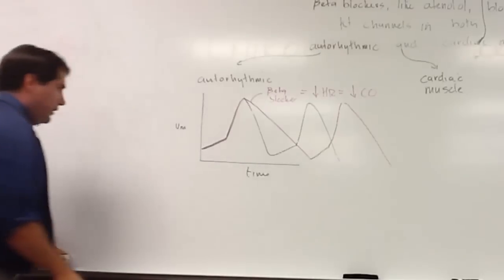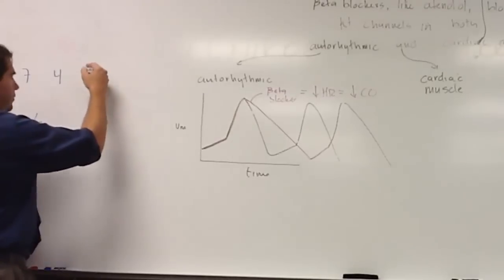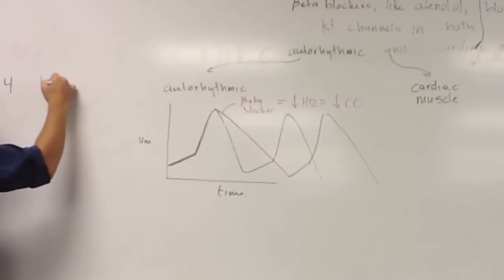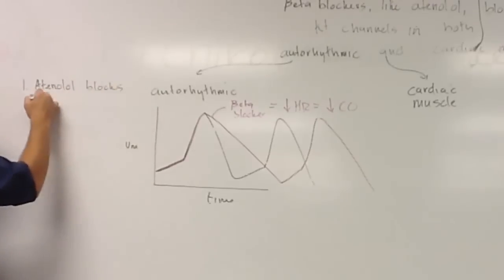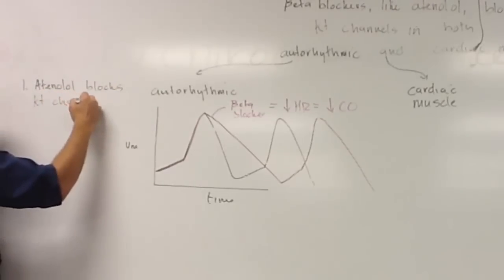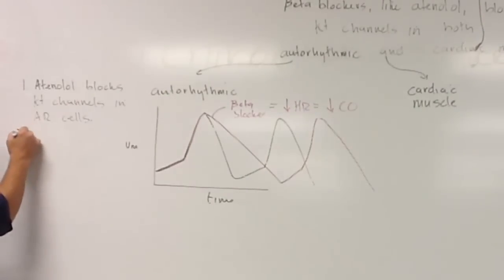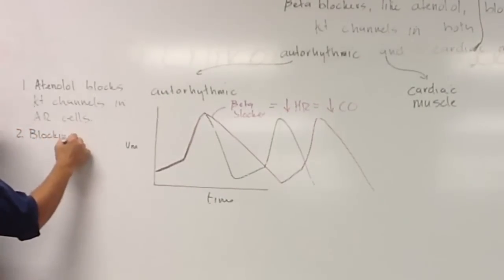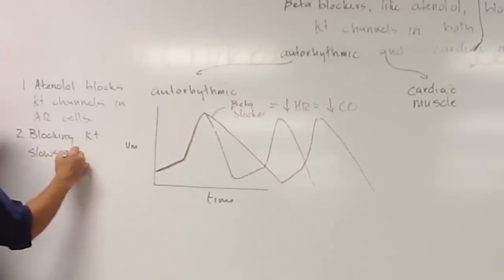Now you may say, I don't really like to draw these things, I would like to write it. And so what you would say is atenolol blocks potassium channels in autorhythmic cells.